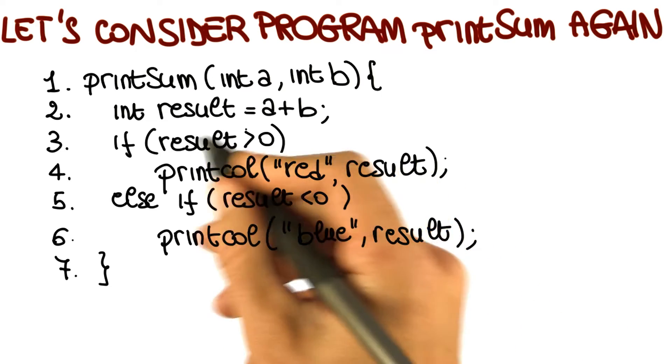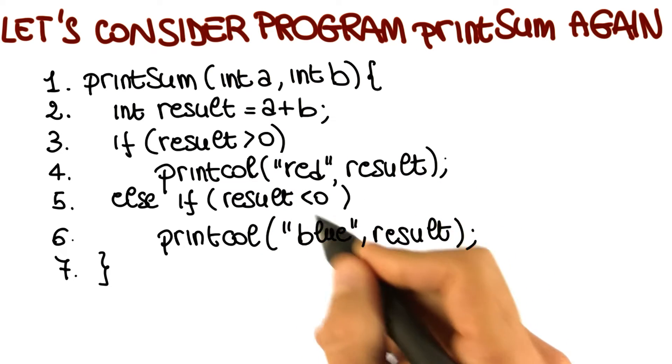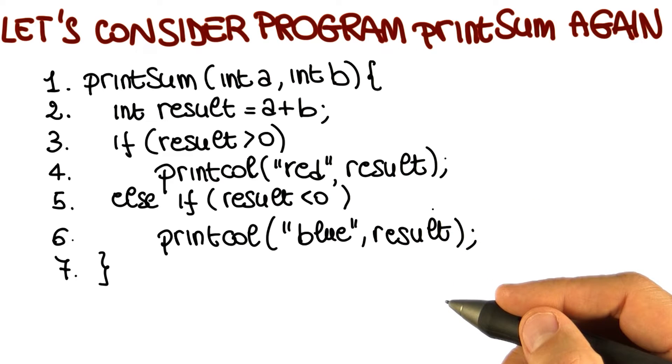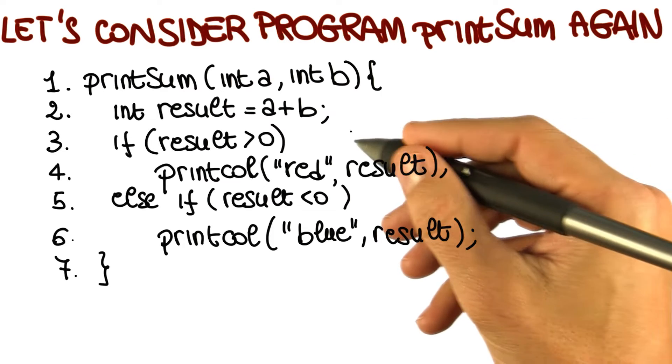So positive results are printed in red and negative results are printed in blue. And as you can see, by looking at the code, we can see some interesting cases that we might want to test. For instance, you can see that there are two decisions made here.